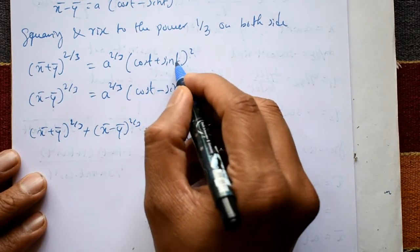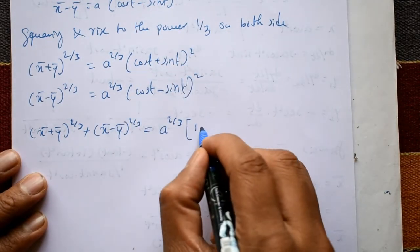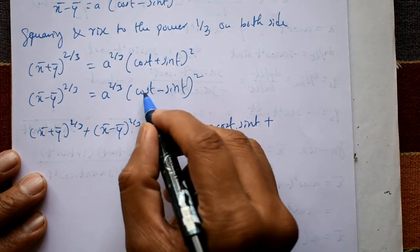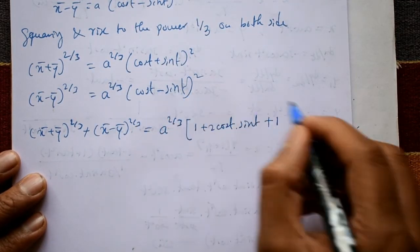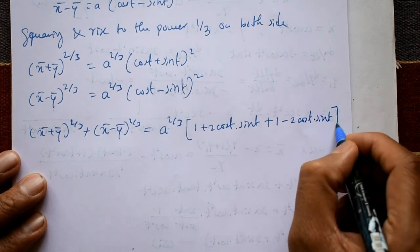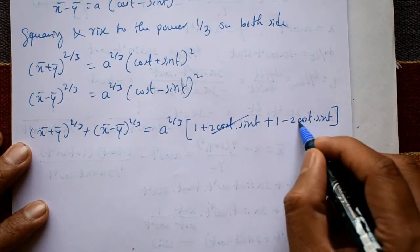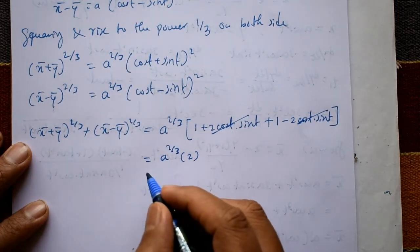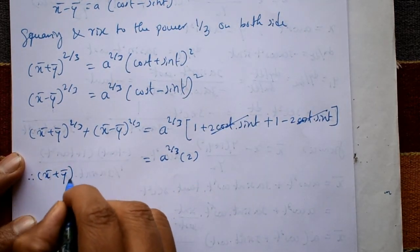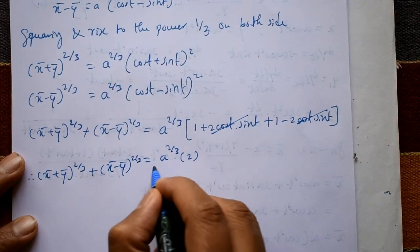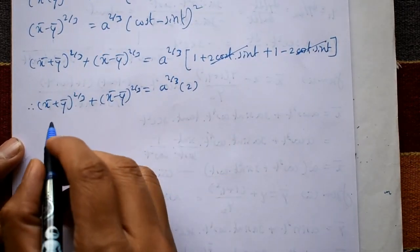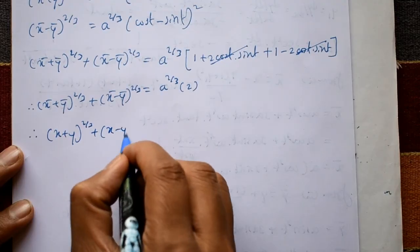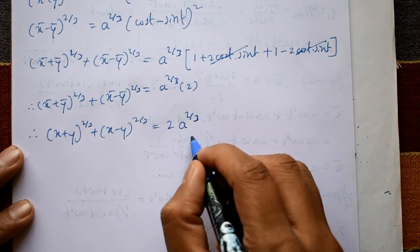Adding these two equations: the ±2·cos(t)·sin(t) terms cancel. Using cos²t + sin²t = 1, we get (x̄ + ȳ)^(2/3) + (x̄ - ȳ)^(2/3) = a^(2/3)·(1 + 1) = 2a^(2/3). Replacing x̄, ȳ with x, y, the required evolute is: (x + y)^(2/3) + (x - y)^(2/3) = 2a^(2/3).